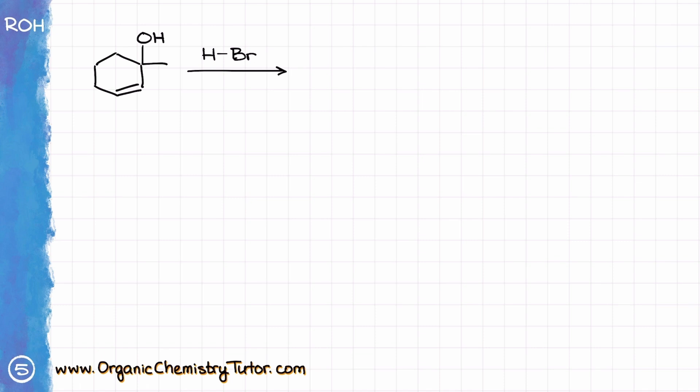The first thing that is jumping at me here right away is that I have two different functional groups on my starting material. I have an alcohol functional group, and I have an alkene. So the question is which of those two functional groups my HBr is going to react with. In cases like that we are going to drop both possible intermediates and brainstorm from there.